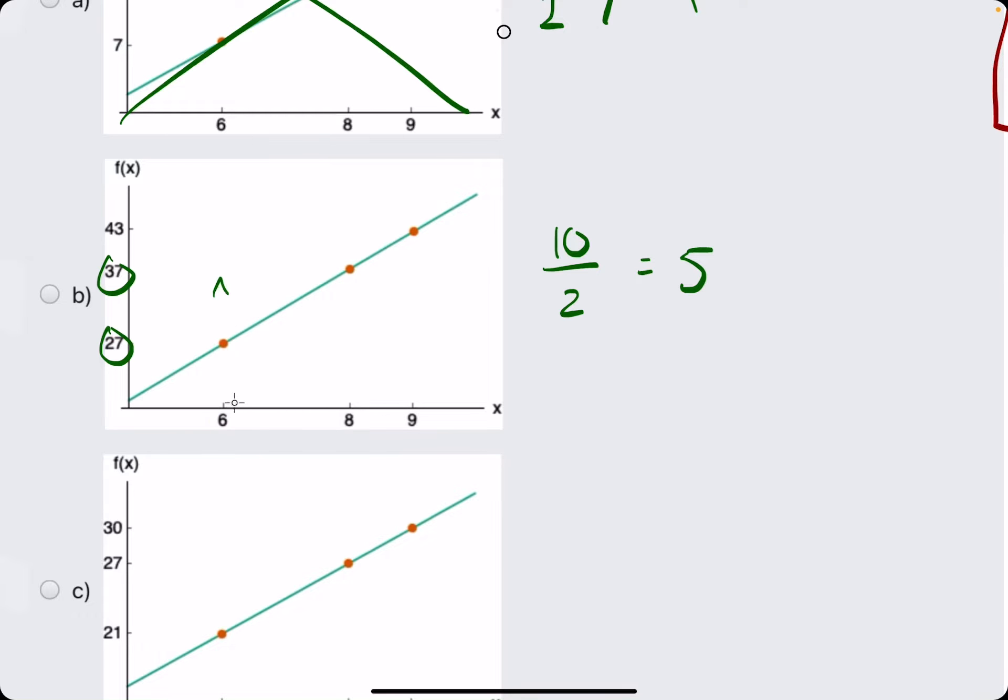So we want to see, does the slope between these two points equal 5? We have 37 to 43 as the rise. So that would be a rise of 6. Not looking good so far.